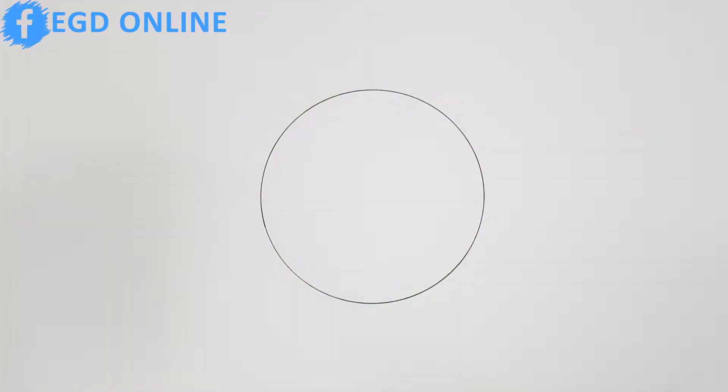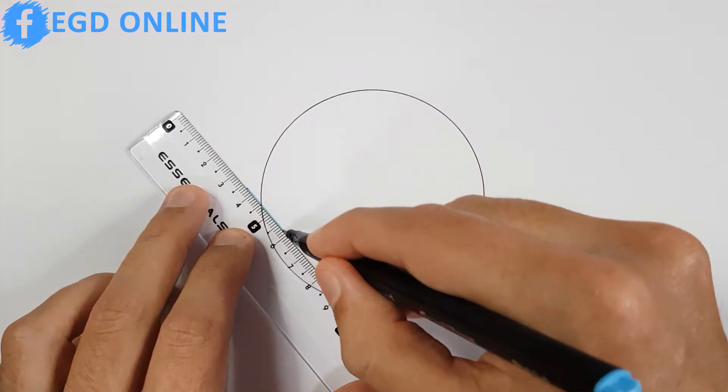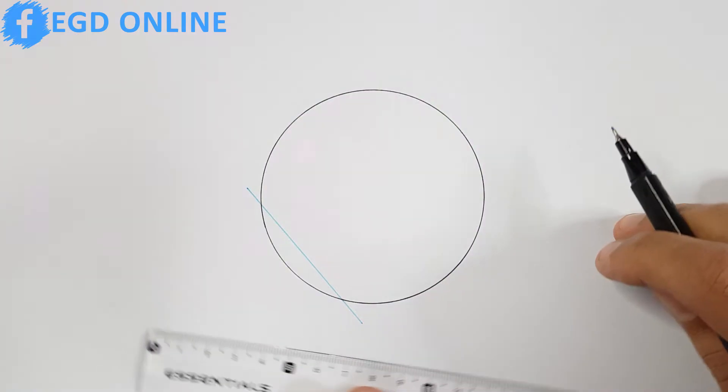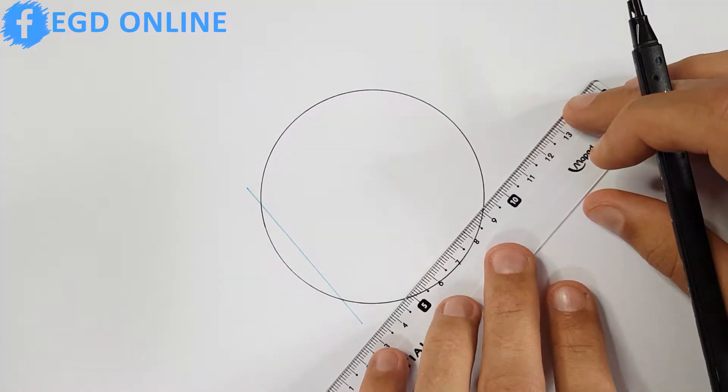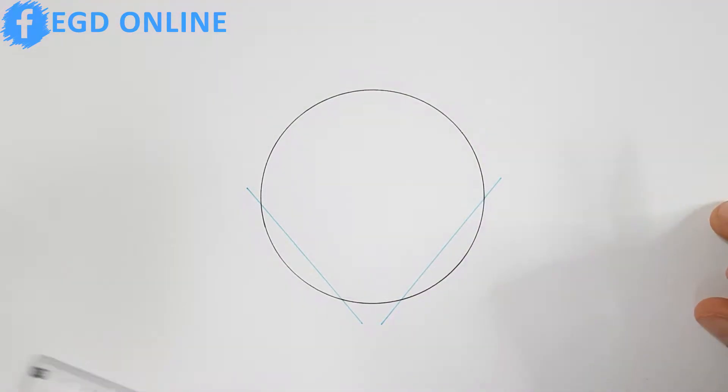And as always, remember that I'm using a blue pen to show my construction lines. Our first step will be to draw two lines that section our circle. These lines will have no specific length and they just need to be close to the edge of your circle.